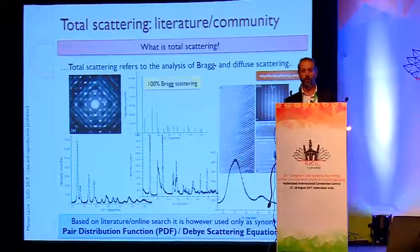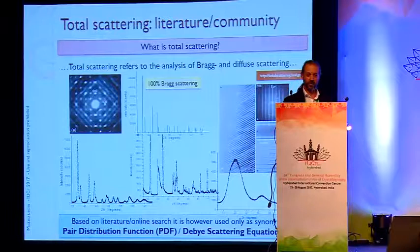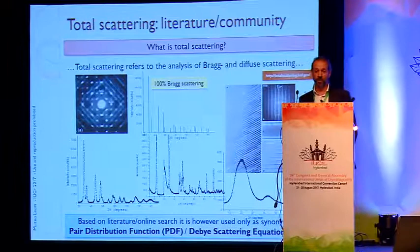The other thing you find in the literature is that Total Scattering for the majority of people involves the pair distribution function or the Debye scattering equation. This is usually the equivalent found in the literature. Somebody else using different tools to do the analysis of the same pattern is, in any case, doing total scattering analysis. And I will try to convince you that we might be able to do it too.